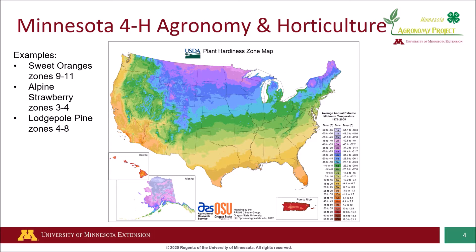Our first example is sweet oranges, which is a type of citrus fruit. They grow in zones between 9 and 11. If we look at our scale on the side, we can see that the minimum zone they can survive in is zone 9, and the coldest extreme temperature in zone 9 is 20 degrees Fahrenheit. So sweet oranges cannot live in areas that experience extreme temperatures colder than 20 degrees Fahrenheit — they simply won't be able to recover and become healthy, viable, vigorous plants in the spring.